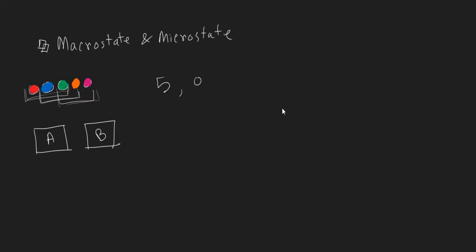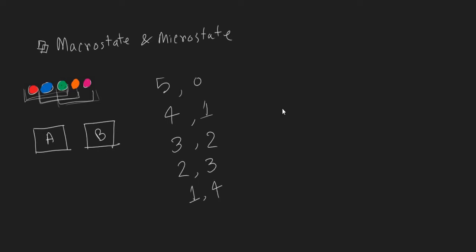Or, we can distribute them like this: 4 of them go to box A, 1 goes to box B. Or, 3 of them go to box A and 2 of them in box B, 2 of them in box A and 3 of them in box B, 1 of them in box A and 4 of them in box B, none of them in box A and all of them go to box B. So, we have 6 different distributions.